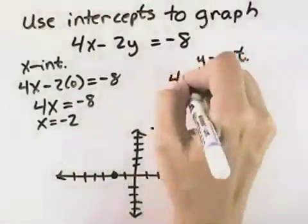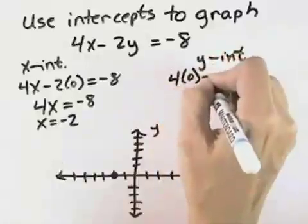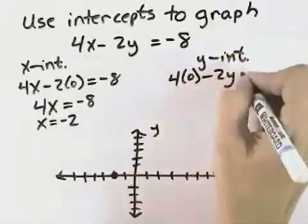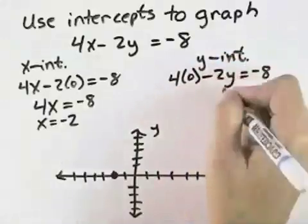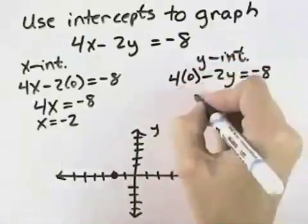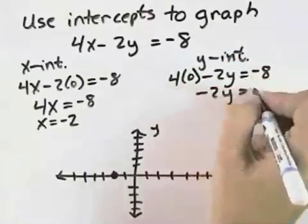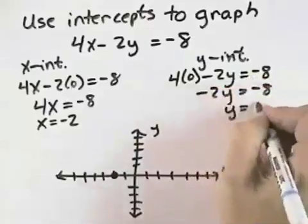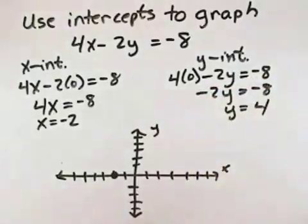For our y-intercept, we let x equal 0, so we have 4 times 0 minus 2y equals negative 8. Since 4 times 0 is 0, we have negative 2y equals negative 8. Dividing by negative 2, the negatives cancel, and we have y equals positive 4.